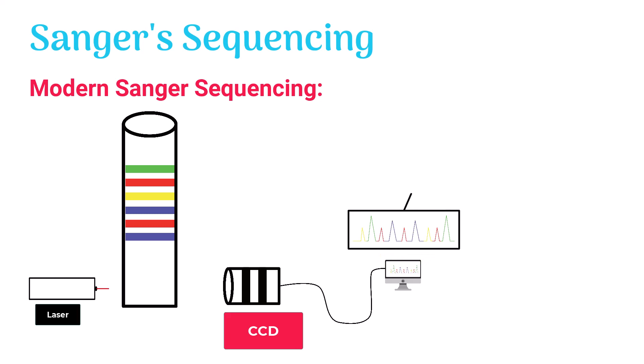This graph is usually known as the chromatogram or electropherogram. Each peak on the chromatogram depicts a nucleotide. This way, we can easily discover the desired DNA sequence.